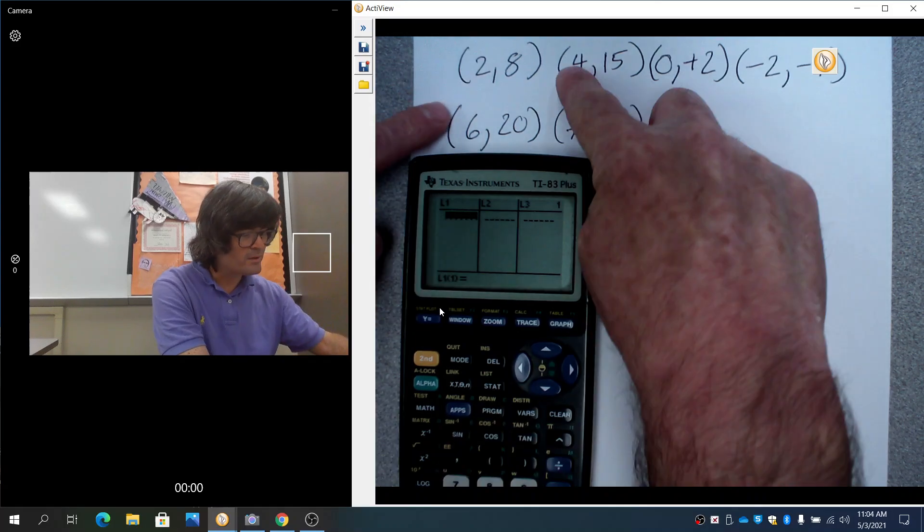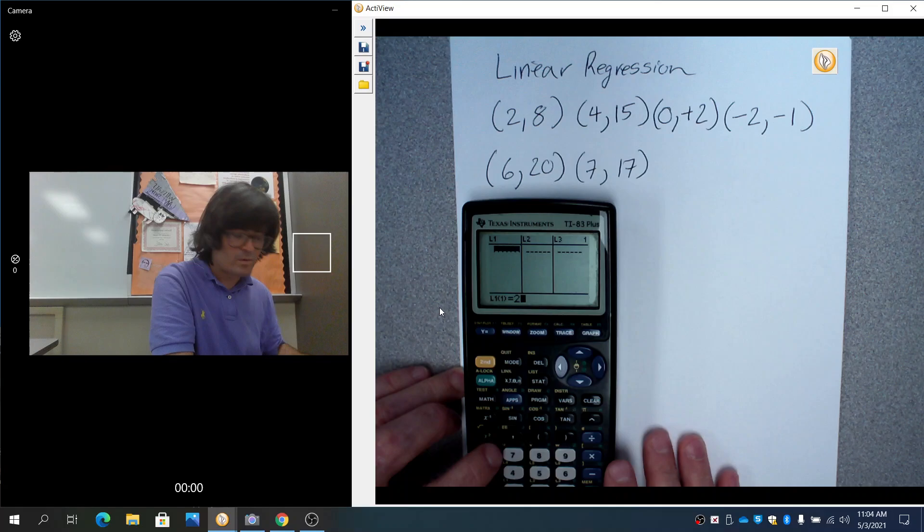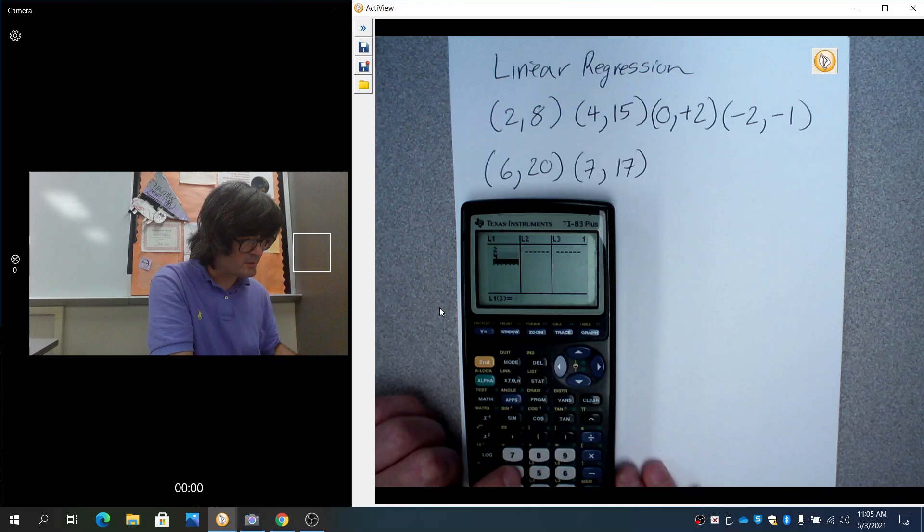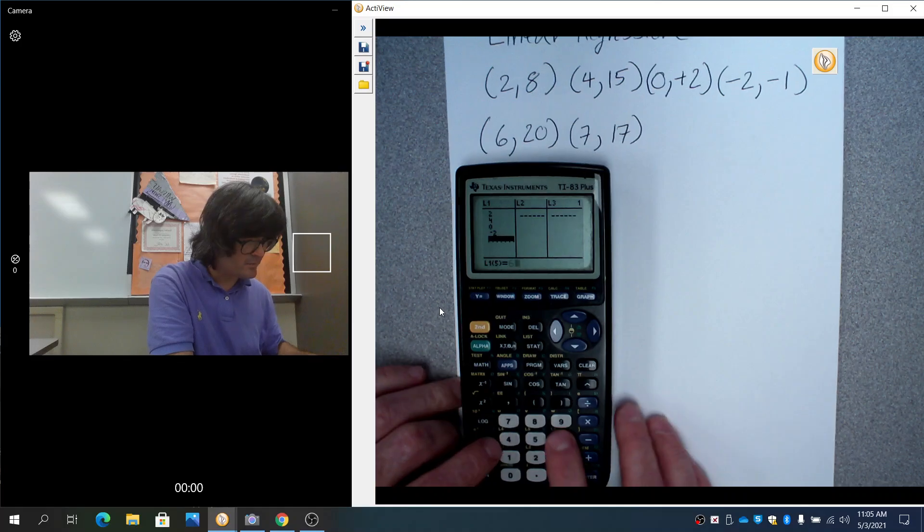So watch me do this. X is 2, 4, 0, negative 2, 6, and 7. So we'll do 2, let me move this up a little bit for you, ENTER.